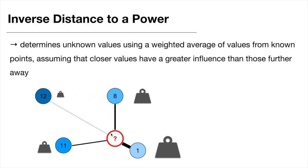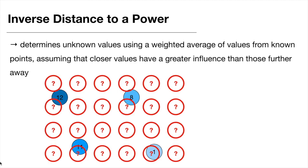If you remember the search ellipse that GDAL allows you to define to exclude some points from the interpolation, you can do that here as well, so that very distant points would not be considered at all in the weighted average computation. And remember, we're not just doing that for a single unknown point — we have many unknown grid points, and to each of them we assign a weighted average based on the known points, finally turning that into a raster image.